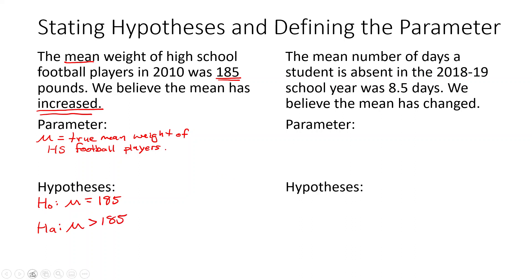Next example: the mean number of days a student is absent in the 2018–2019 school year was 8.5 days, and we believe the mean has changed. The parameter of interest that we're talking about here is the true mean number of days a student is absent.